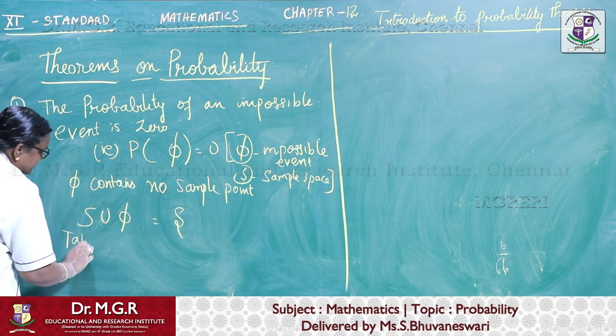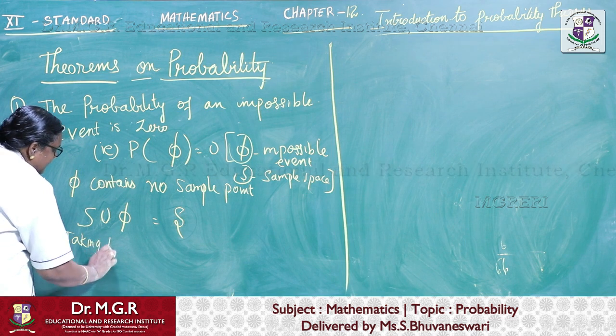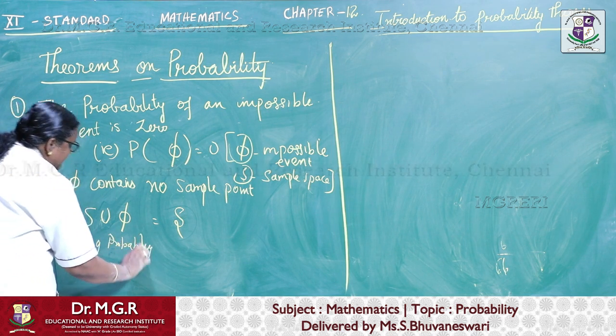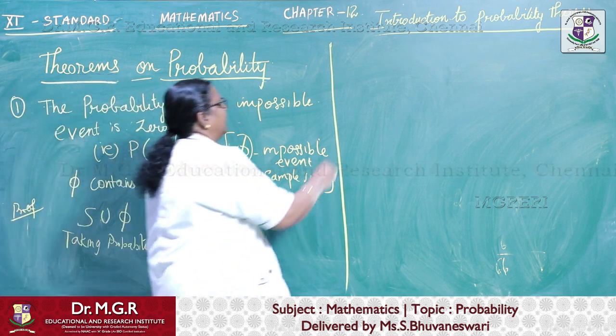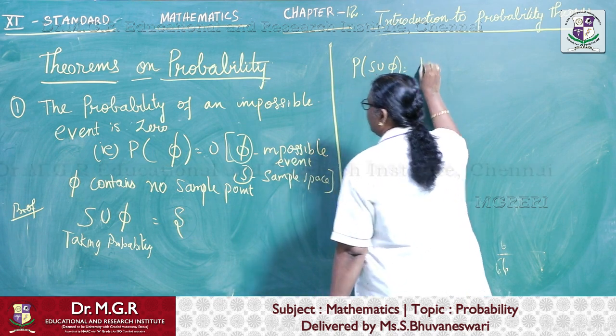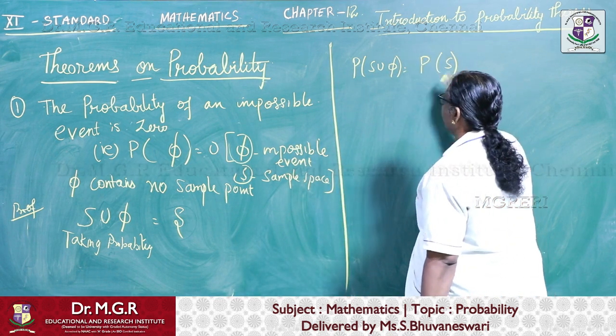Now, taking probability we have P of S union phi. P of S union phi is equal to P of S.